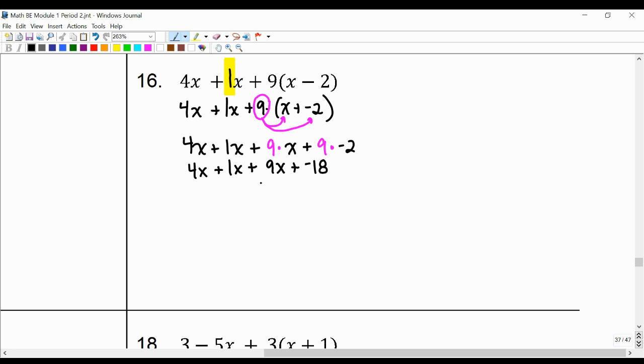I could have simplified this sooner, but I didn't. By the way, at any point, feel free to pause or rewind the video, or maybe even pause and see if you can predict what the answer is going to be. 4x plus 1x plus 9x, and then these are unlike terms. 1 plus 9 is 10, plus 4 is 14x.